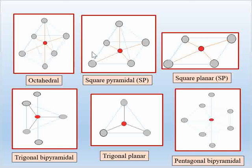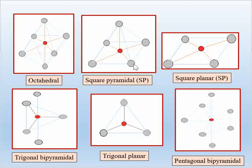The second geometry is square pyramidal geometry, which is similar to octahedral, but the difference is the removal of one ligand from the axial position. Here you can see four ligands in the square planar position in the xy plane, and there is no ligand on the other side of the plane. This pyramidal shape is called square pyramidal geometry.